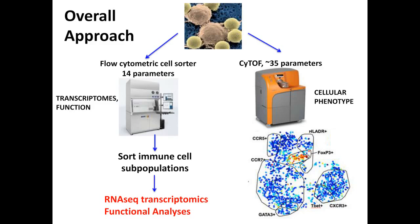Dr. Rao, how do you prepare cells from synovial fluid for flow or mass cytometry? We have Ficoll-ed them — density centrifugation to eliminate granulocytes. In synovial fluid from inflammatory arthritis patients, the vast majority of cells are neutrophils, so to analyze other mononuclear cell populations it's helpful to remove neutrophils first. We Ficoll-ed them and processed them similarly to blood samples — in both cases Ficoll-ing, cryopreserving the mononuclear cells, and then thawing and analyzing them in batches. If you're interested in neutrophils, you can analyze the total population, but this is how we did it.